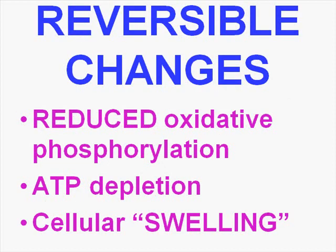Some of the classic reversible changes would be a reduction in oxidative phosphorylation, a reduction therefore in the production of ATP, and cellular swelling. These are all reversible changes. Your mitochondria can be damaged and produce decreased amounts of ATP, resulting in reduced oxidative phosphorylation, but it could still be reversible.